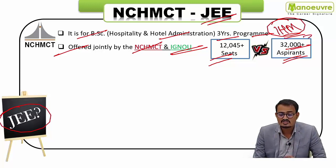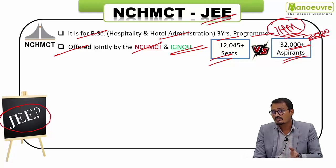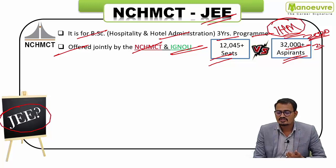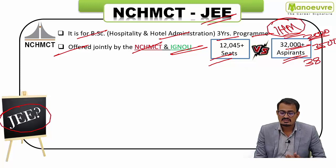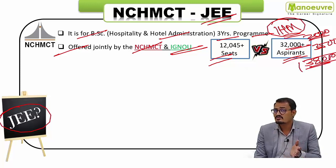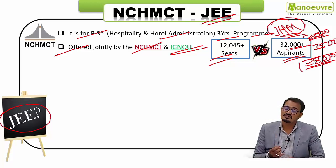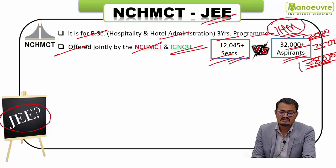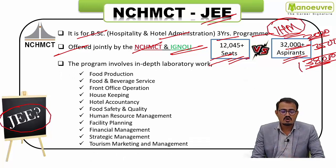In 2021 the number may have increased by about 10%, so we can assume around 35,000 aspirants, and for 2022 perhaps 38,000. As the number of aspirants increases each year, the competition level is getting tougher, though we can also expect some rise in the number of seats. The three-year program involves in-depth laboratory work in various operational areas.